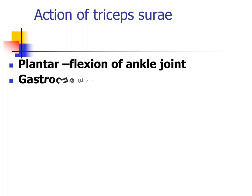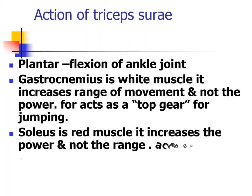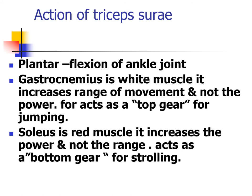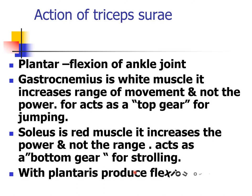Action of the triceps surae: plantaris, gastrocnemius, and soleus together produce flexion of the ankle joint. Gastrocnemius is white muscle — it increases the range of movement and not the power, acting as a top gear for jumping. Soleus is red muscle — it increases the power and not the range, acting as a bottom gear for strolling. With plantaris, they also produce flexion of the knee joint.